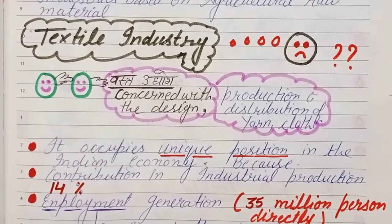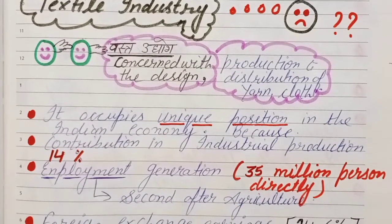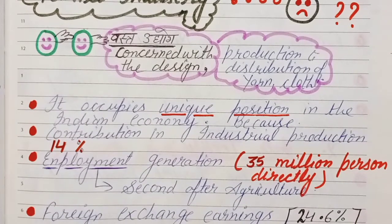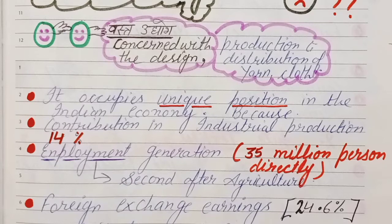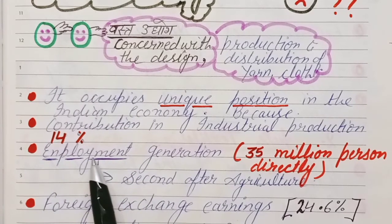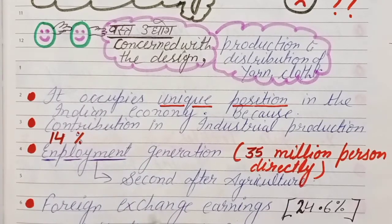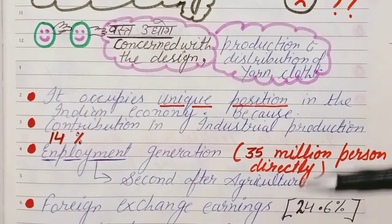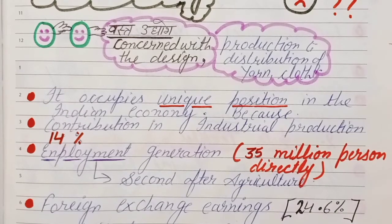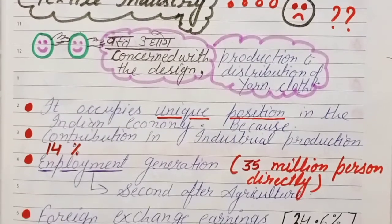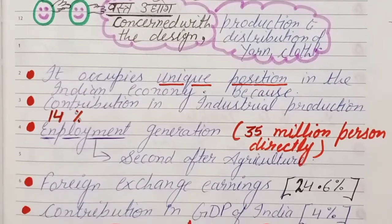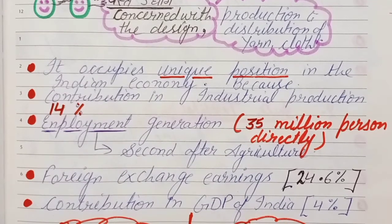Its contribution in industrial production is 14%. In terms of employment generation, 35 million persons are directly employed in textile industries. It holds second position after agriculture in employment generation. Its contribution in foreign exchange earnings is 24.6%, and its contribution to India's GDP is 4%. This is why textile industry has a unique position in the Indian economy.